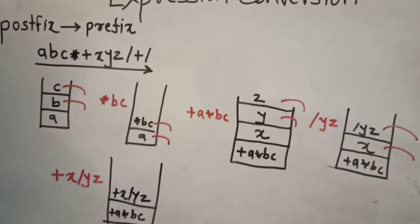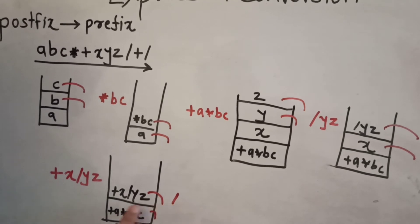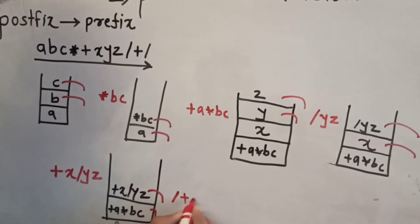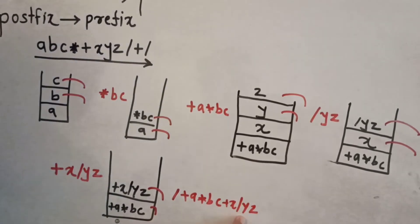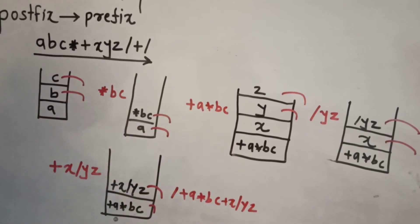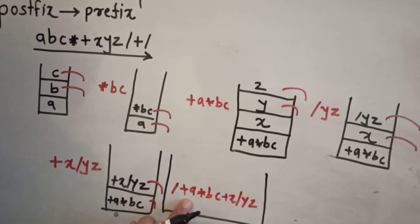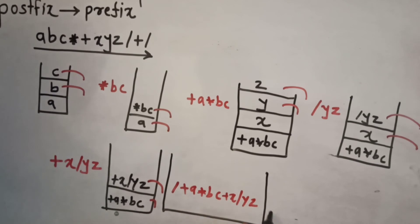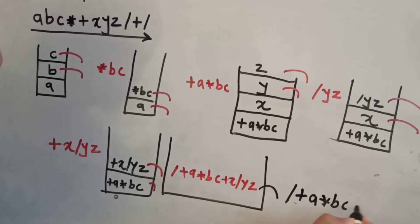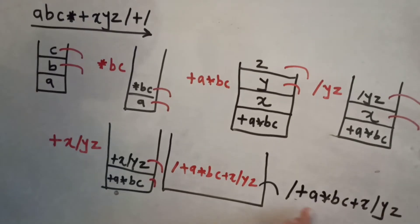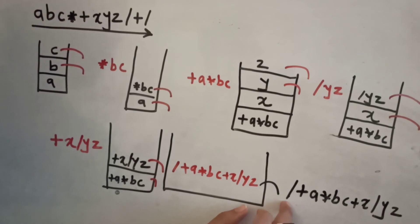The last character is the division operator. We delete the topmost two operands — +A*BC and +X/YZ — and form the combination with division at the first position. This gives us /+A*BC+X/YZ, which is pushed onto the stack. As the expression is now over, this is our final result on the stack. We delete and print it, giving us the final prefix expression: /+A*BC+X/YZ. The operators are at the first position followed by the operands — that is the prefix format.